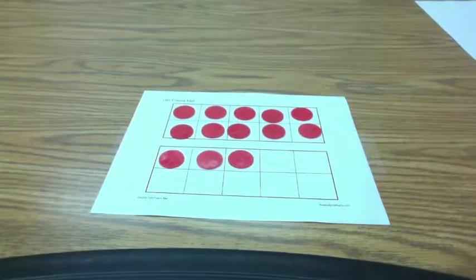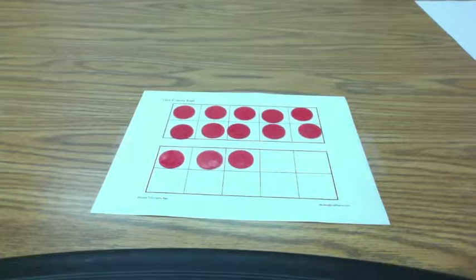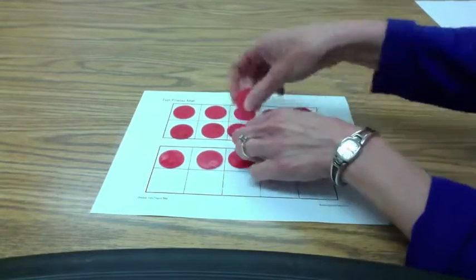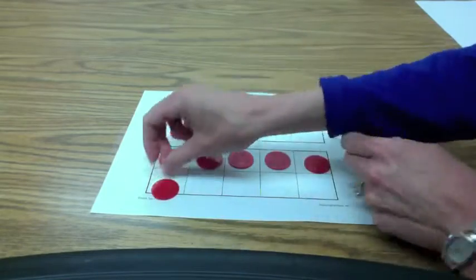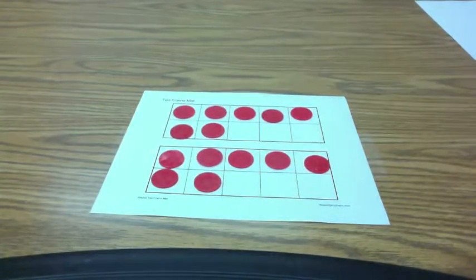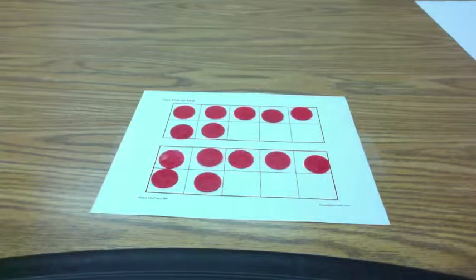Another thing that kids are going to need to know is double facts. They're going to need to know, for example, that without counting, 7 plus 7 is 14, or 3 plus 3 is 6, or 5 plus 5 is 10. Those doubles from 1 plus 1 to 10 plus 10 are going to be necessary.